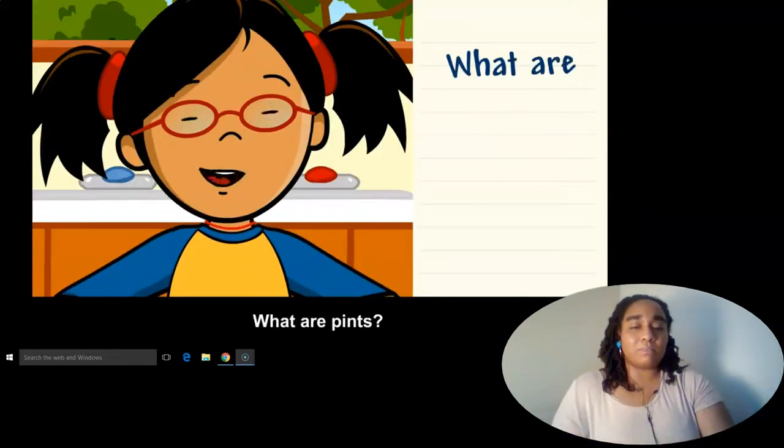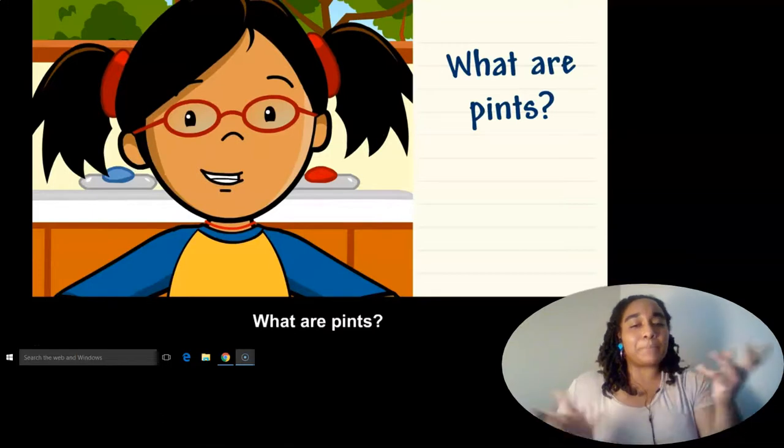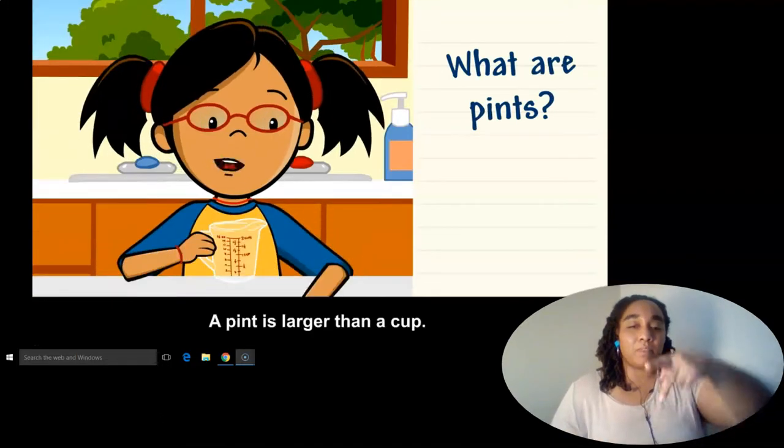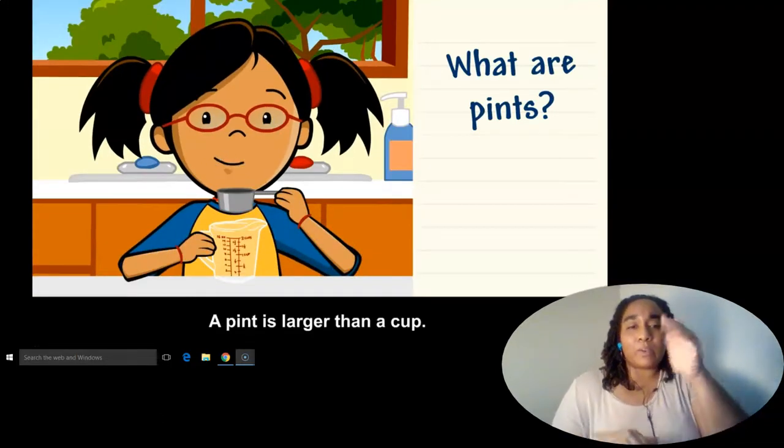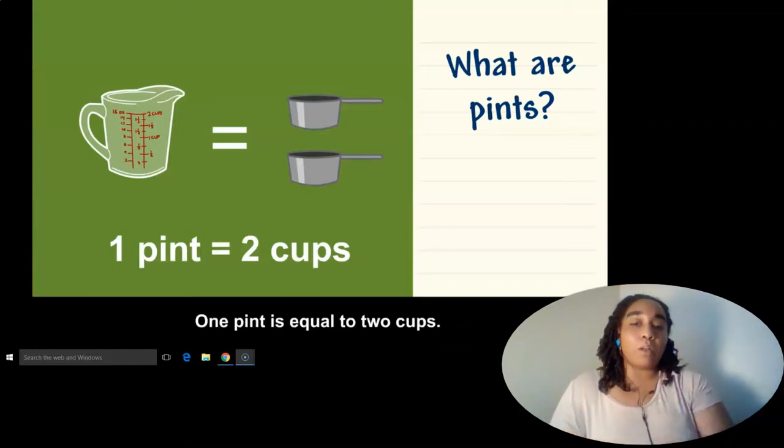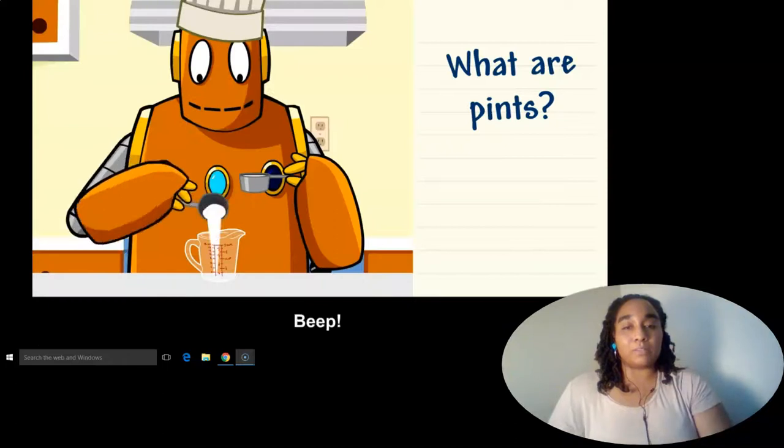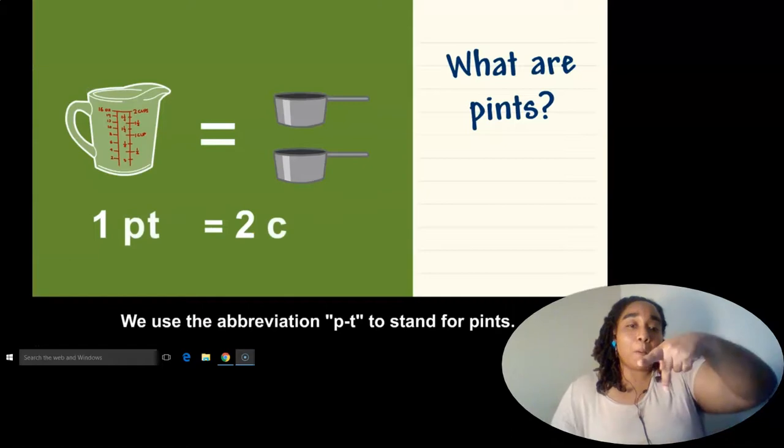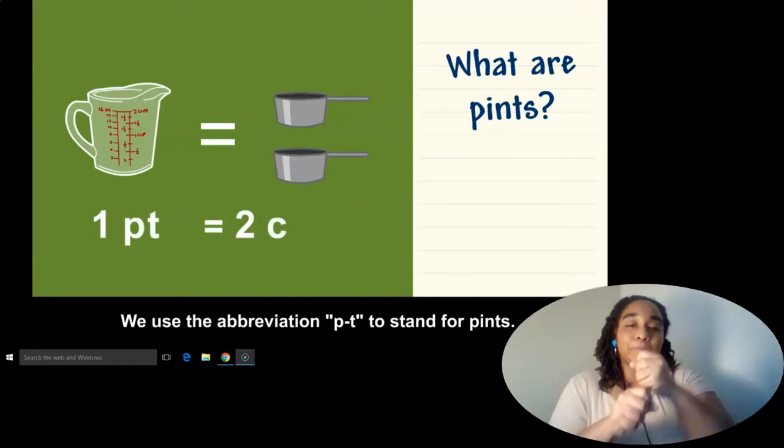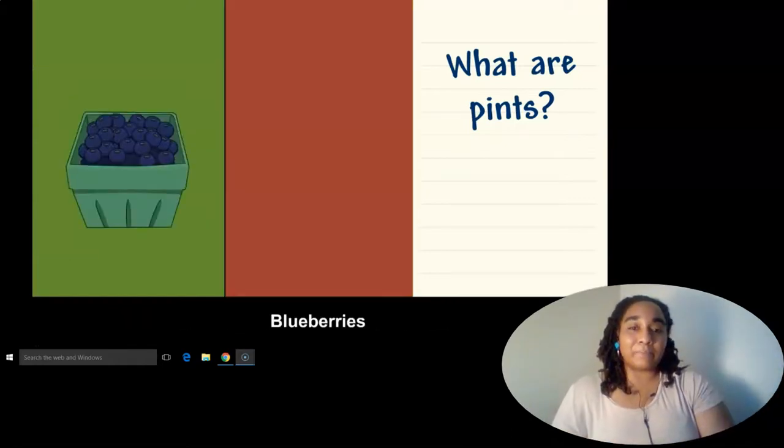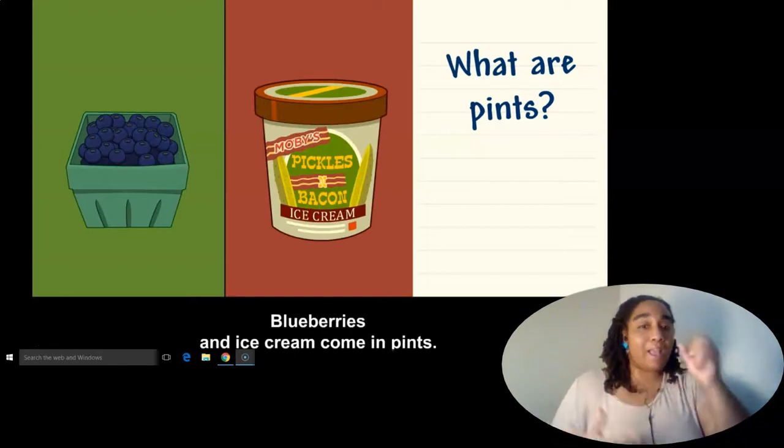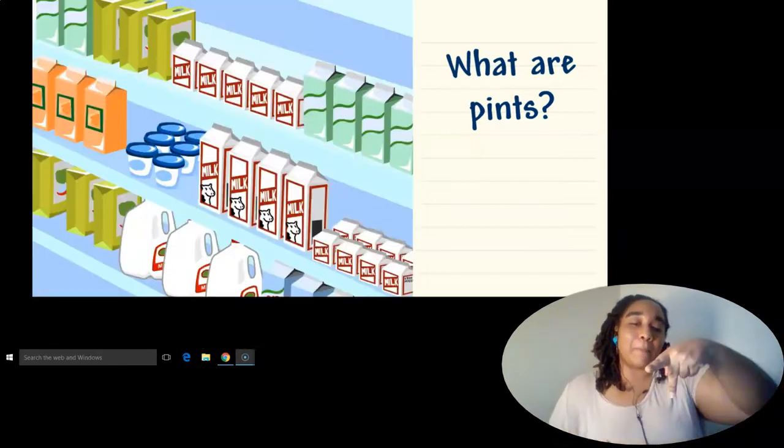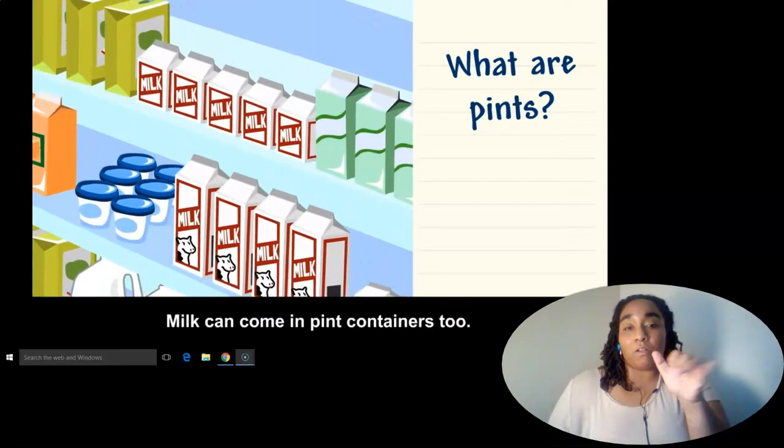What are pints? A pint is larger than a cup. One pint is equal to two cups. We use the abbreviation PT to stand for pints. Blueberries and ice cream come in pints. Milk can come in pint containers, too.